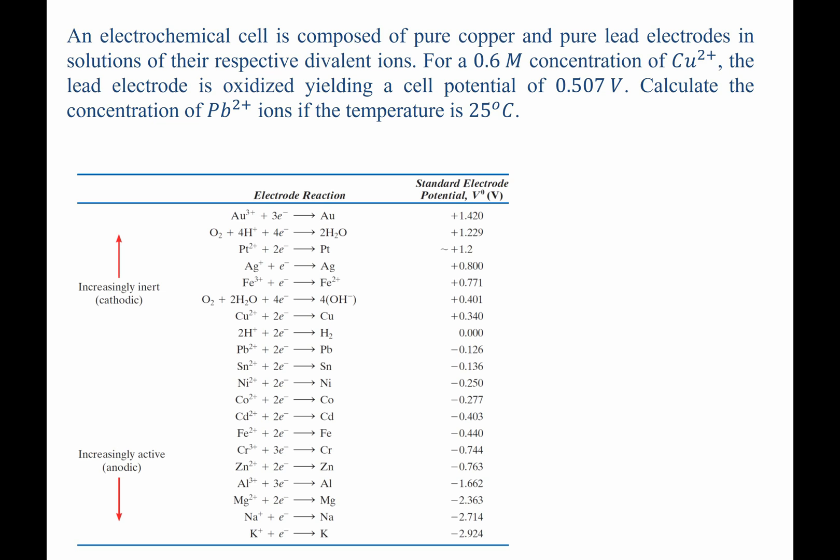This table shows, for many different metals, what happens as the ionic species picks up electrons to form the metal, and it gives you the standard electrode potential. In this case, we have divalent ions, so copper 2 plus picking up two electrons to form copper metal, and we're told what voltage this corresponds to. We also have lead 2 plus picking up two electrons to form lead metal, and we know what voltage that corresponds to.